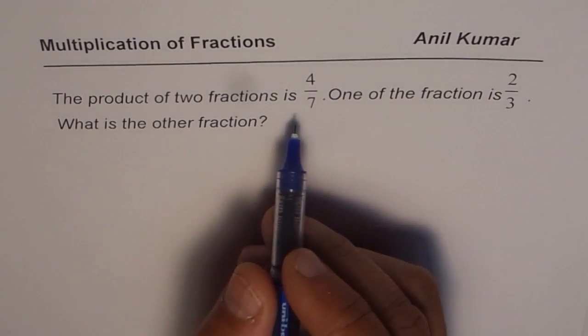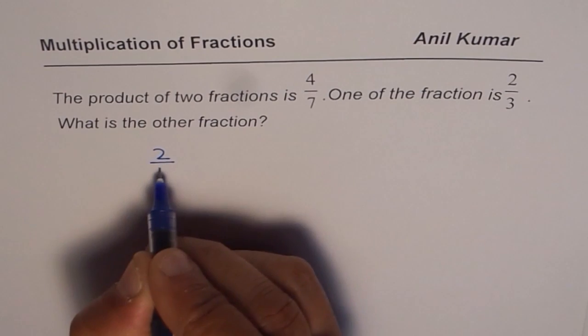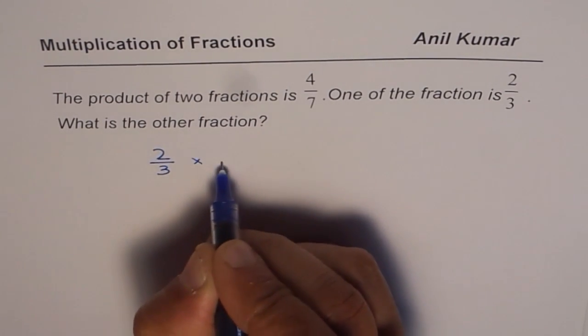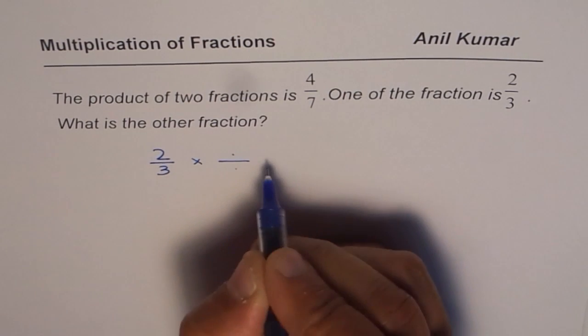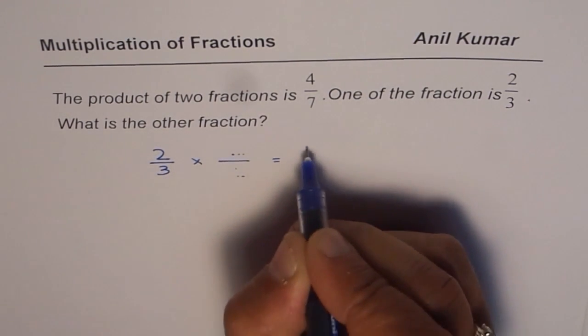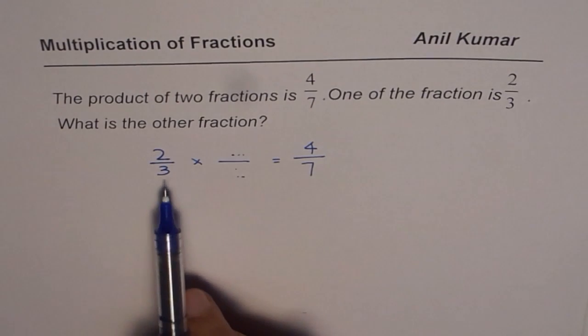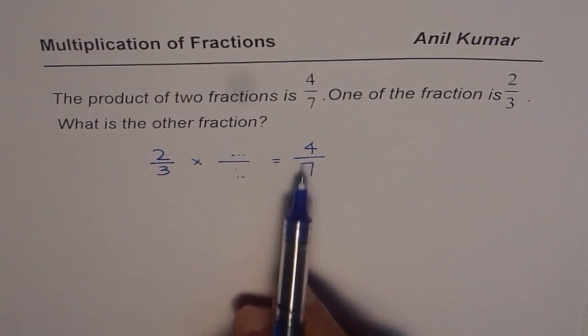So what do we mean here? One of the fraction is 2 over 3. That means 2 over 3 times something over something. Let me write something over something equals 4 over 7. So this is the equation. The product of these two is 4 over 7.